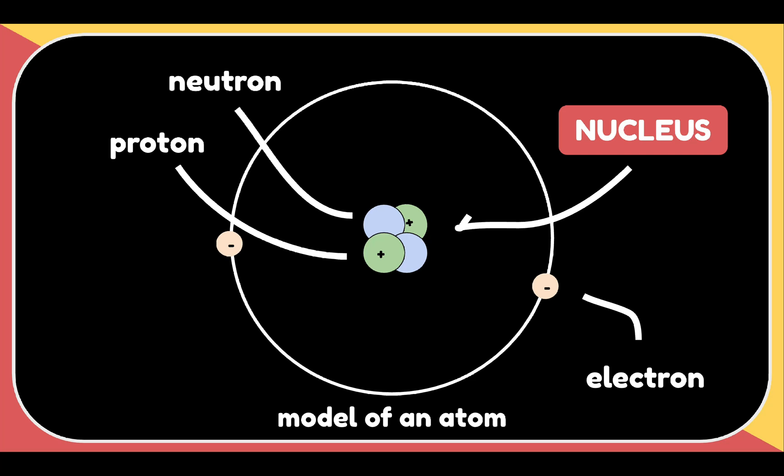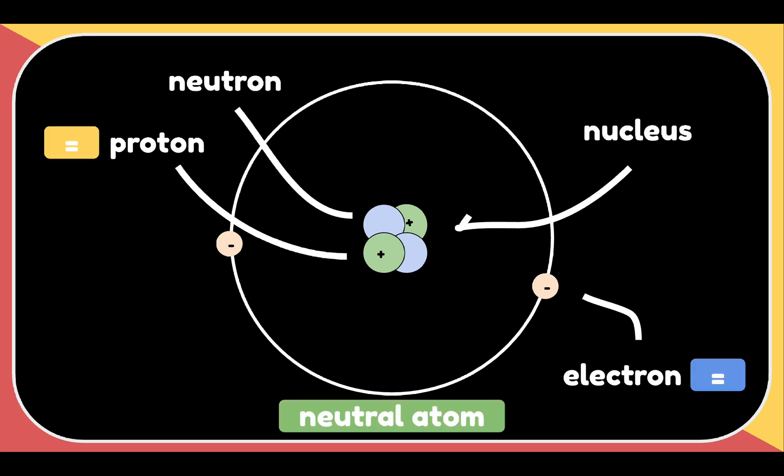Now, let us consider the number of these particles. A neutral atom, or an atom without an overall charge, will have the same number of protons and electrons. Because the number of electrons is the same as the number of protons, the atom has no overall charge. That's why it's neutral.